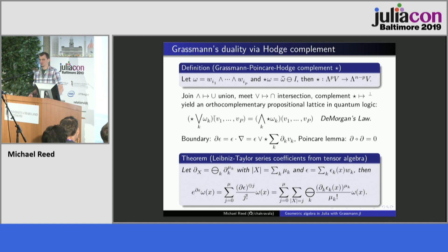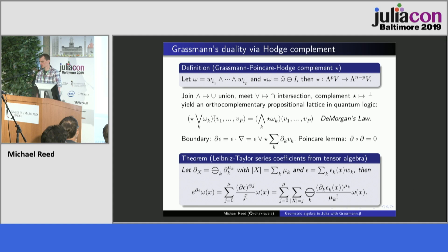From the geometric product, we build an orthogonal complement operation called the Grassmann-Poincaré-Hodge complement — different names appear throughout history. I take the geometric product of the reverse of an element with the volume element i, and in Julia we can use uniform scaling for i. If you have a grade-p tensor, then the orthogonal complement is a grade-(n−p) tensor.